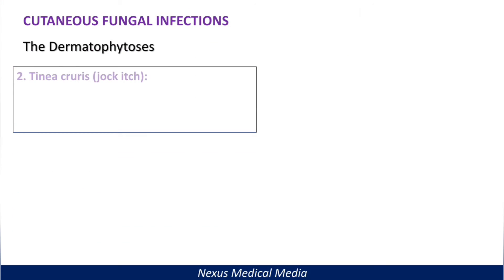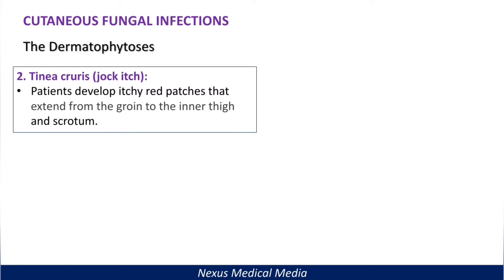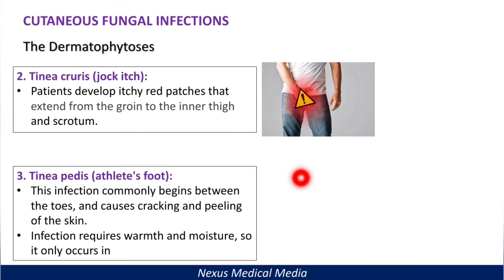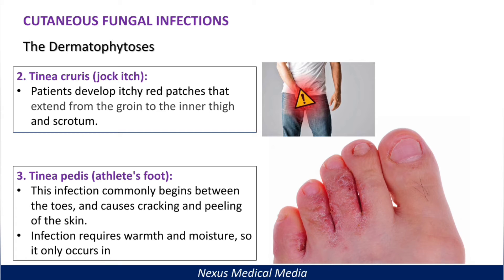Tinea cruris, or jock itch, causes itchy red patches that extend from the groin to the inner thigh and scrotum. Tinea pedis, or athlete's foot, commonly begins between the toes and causes cracking and peeling of the skin. This infection requires warmth and moisture, so it is common in those who are always wearing shoes, such as footballers.